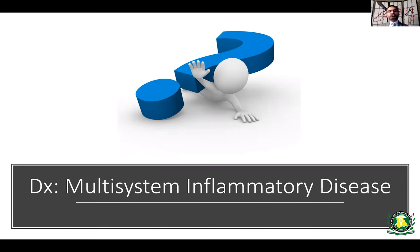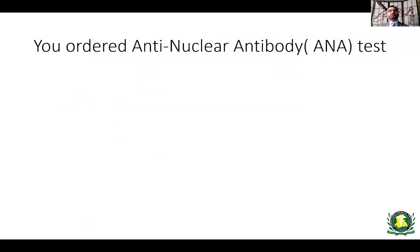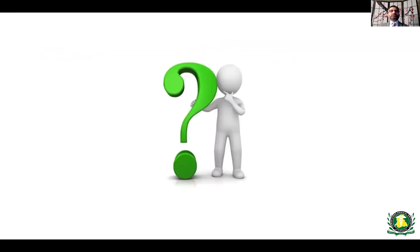With this history, physical exam, and these abnormal lab values, you conclude this person has a multi-system inflammatory disease because multiple systems are involved and the inflammatory markers are high. Being an astute clinician, you think of the differential diagnosis and lupus comes to mind. So you order another test called the Anti-Nuclear Antibody Test, or ANA. The test comes back positive at a titer of 1 to 640. Now you have to think about how to make the diagnosis of lupus.